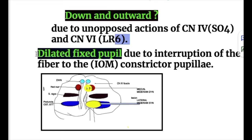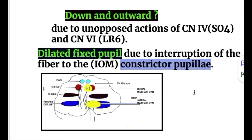The pupil is dilated and fixed due to interruption of fibers to the intraocular constrictor pupillary muscles, which are supplied by the oculomotor nerve. The other intraocular muscles — the dilator pupillary — are supplied by the cervical sympathetic ganglion.